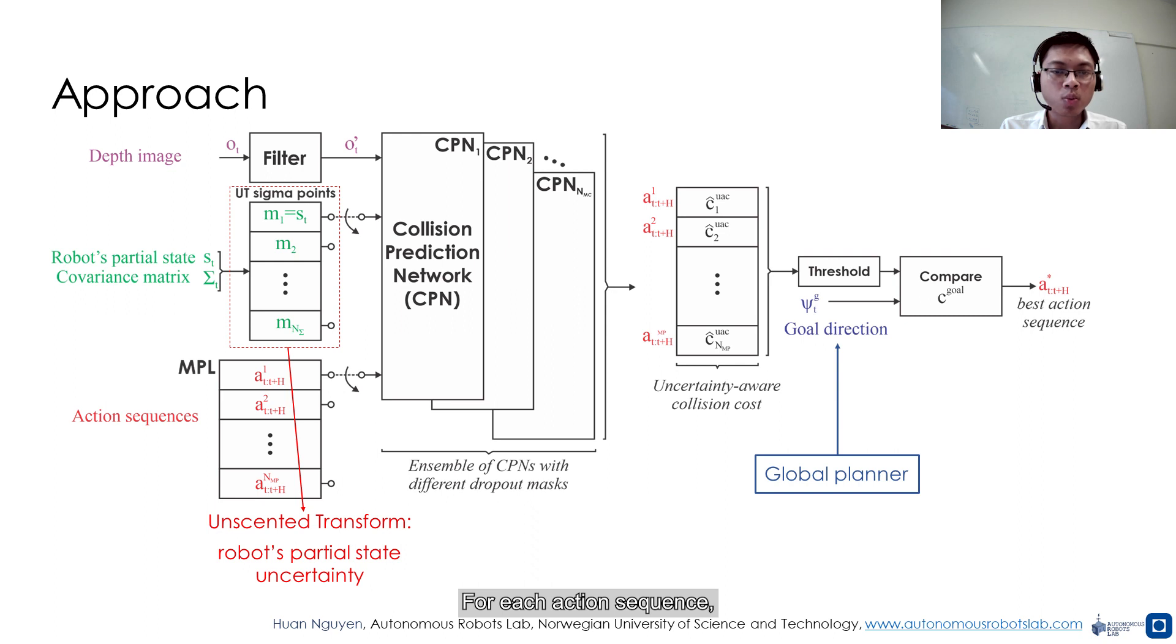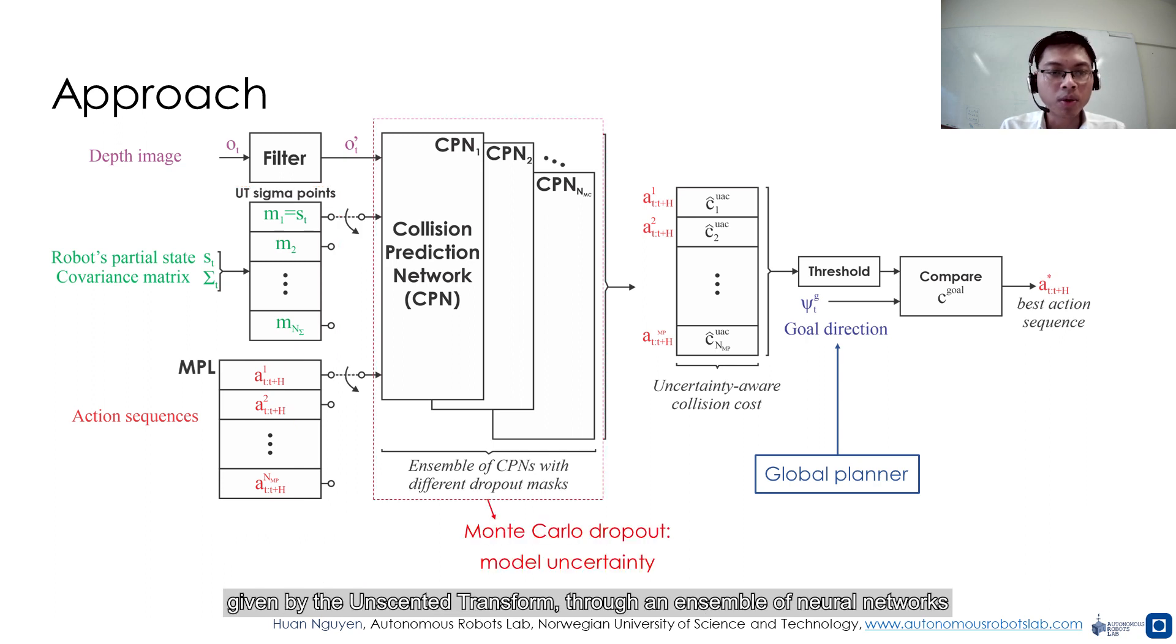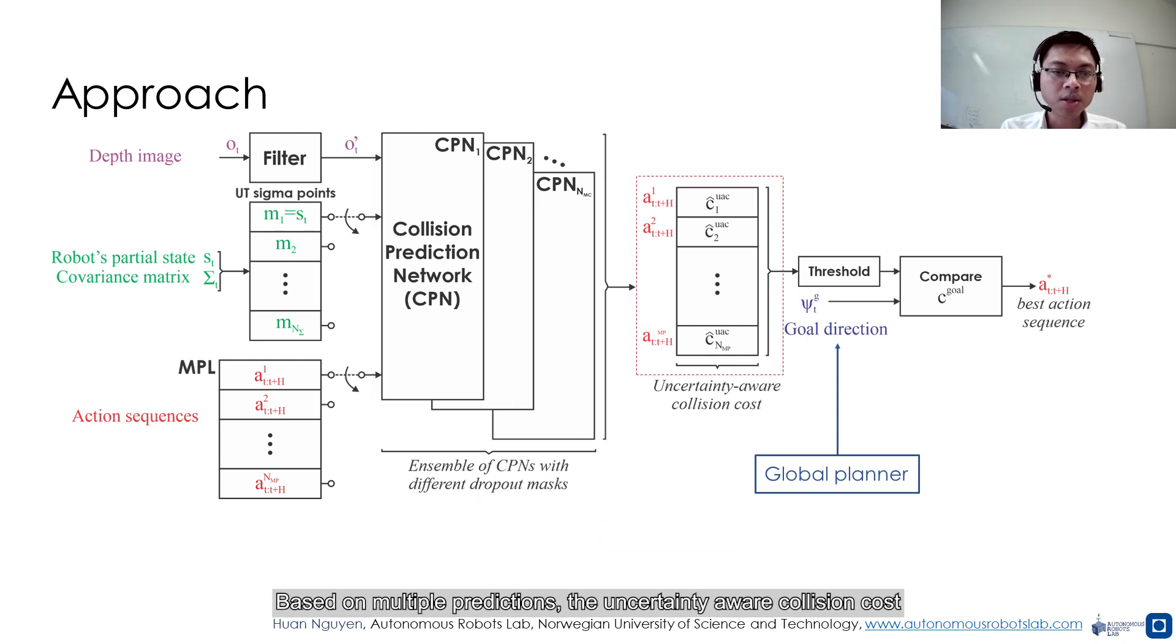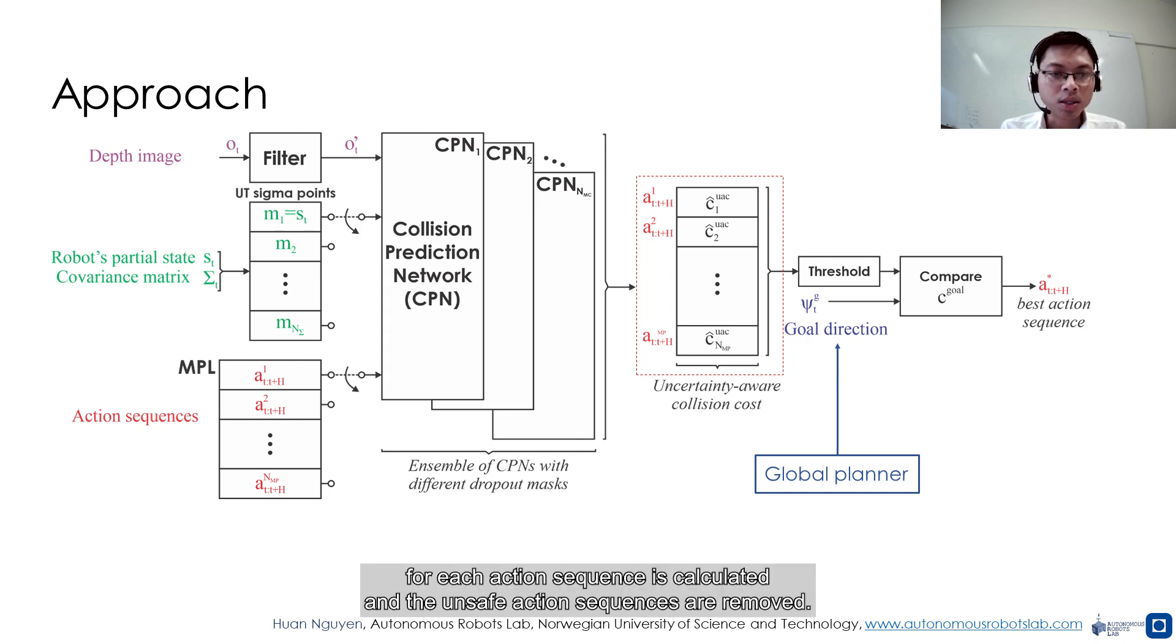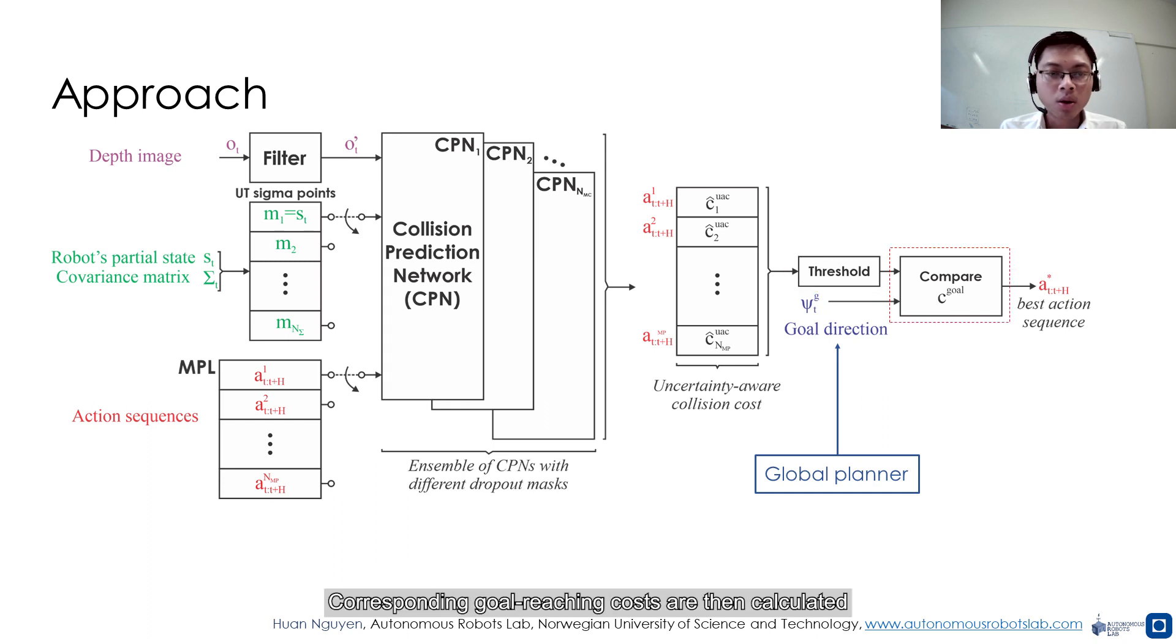For each action sequence, we propagate the sigma points around the mean partial state of the robot given by the unscented transform through an ensemble of neural networks obtained by the Monte Carlo dropout method based on multiple predictions. The uncertainty-aware collision costs for each action sequence are calculated and the unsafe action sequences are removed. Corresponding goal-reaching costs are then calculated to select the best action sequence in a receding horizon fashion.